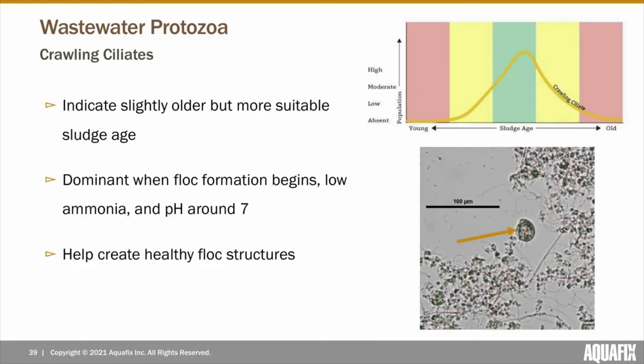Now let's move on to protozoa that are more indicative of a healthier sludge age. Crawling ciliates are indicators of an older and more sustainable sludge age, as they primarily consume flock rather than free bacteria. They're dominant when flock formation is present, ammonia levels are low, and the pH is around neutral. Crawling ciliates have actually been referred to as the cows of wastewater, as they graze on loosely attached bacteria on the edges of flock, helping to maintain a more healthy and condensed flock structure.